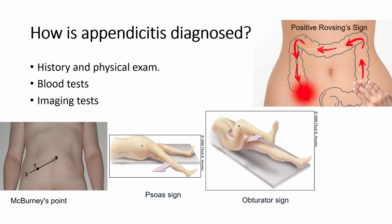How is appendicitis diagnosed? Taking a history and performing a physical examination is the main approach. For paraclinics, we can order a blood test to check the white blood cell count and CRP levels. We can also ask for imaging, with abdominal ultrasound focused on the right lower quadrant being most common.